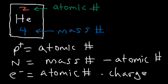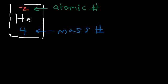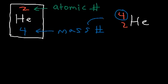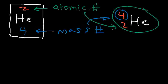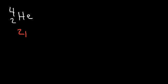An isotope of helium can be written with the mass number on top and the atomic number on the bottom. The mass number is usually the larger of the two; the atomic number is the smaller one. Whichever number is lower is the atomic number and the higher one is the mass number, so don't get confused. Helium has two protons, two neutrons, and as a neutral atom has two electrons.